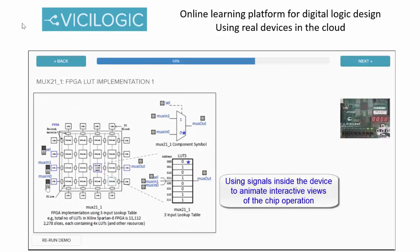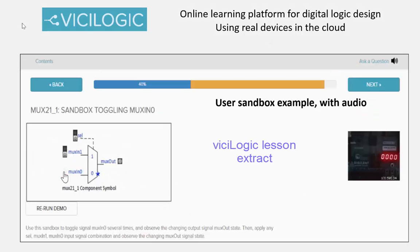Look inside the FPGA device and understand how digital logic is implemented using lookup table memory and registers. Apply any cell MUXIN1, MUXIN0 input signal combination and observe the changing MUX out signal state. Observe the hardware changing with input widget signal changing.